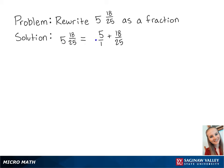So we're going to multiply the first fraction by 25 twenty-fifths. This gives us 125 twenty-fifths plus 18 twenty-fifths. 125 plus 18 is 143, so this equals 143 twenty-fifths. And this is the final answer.